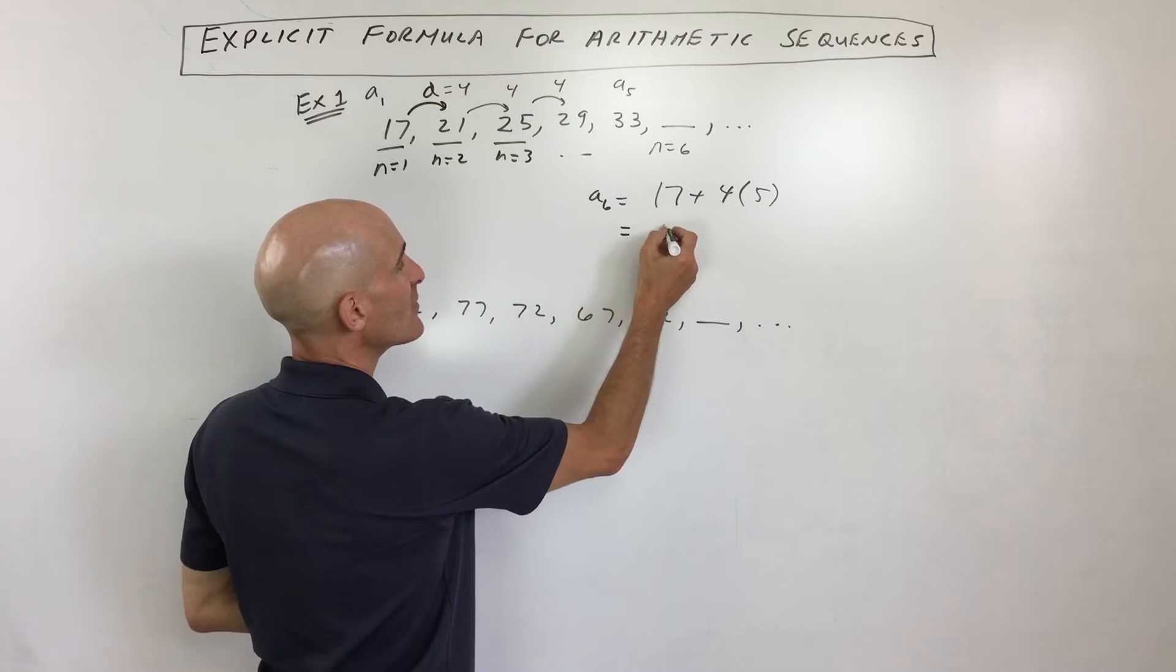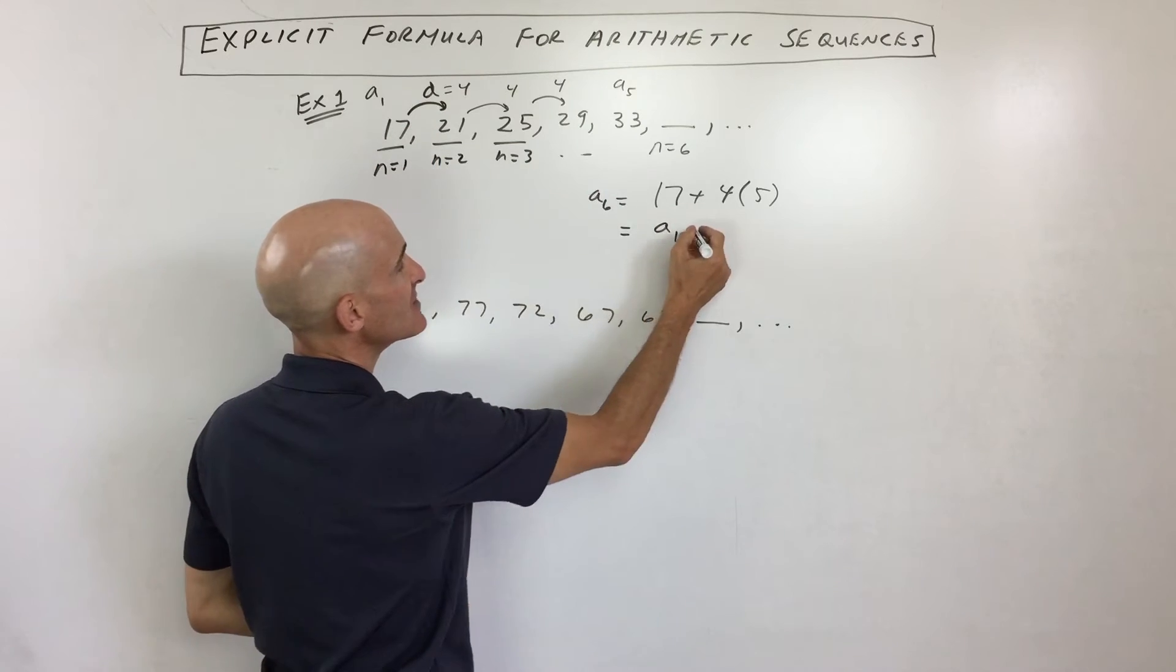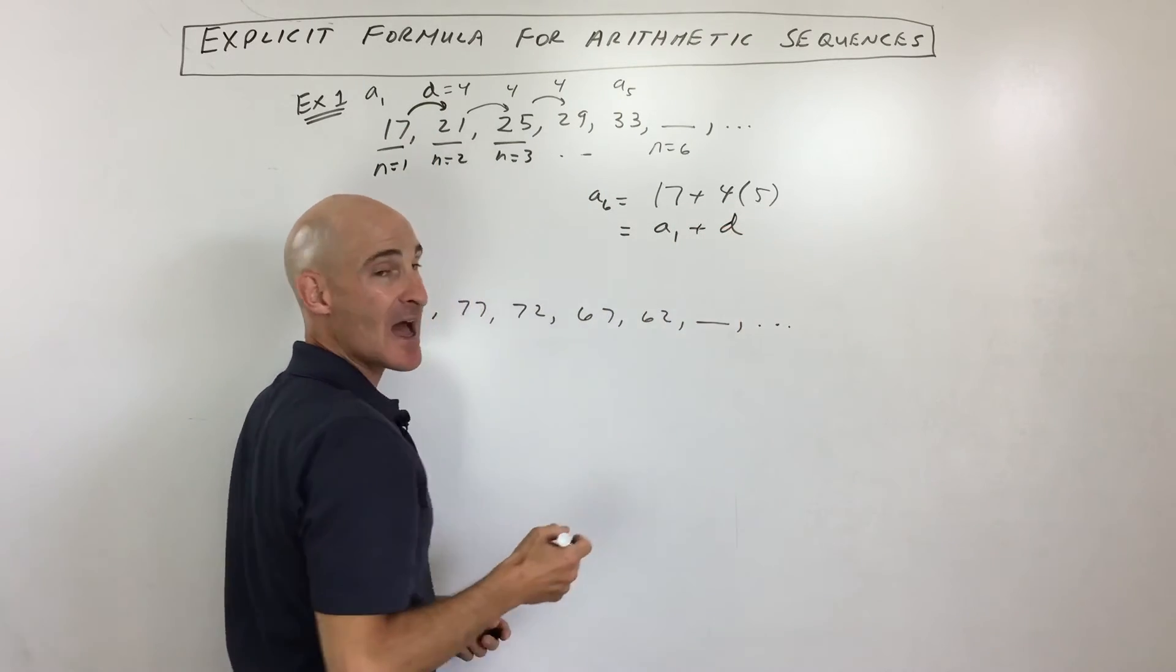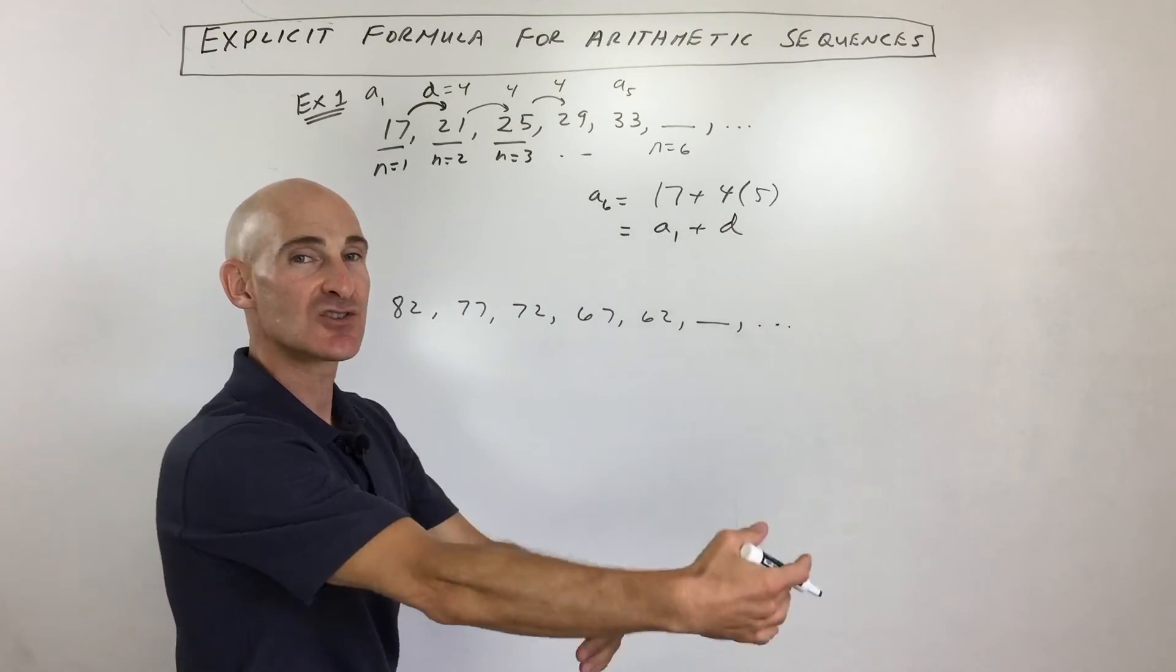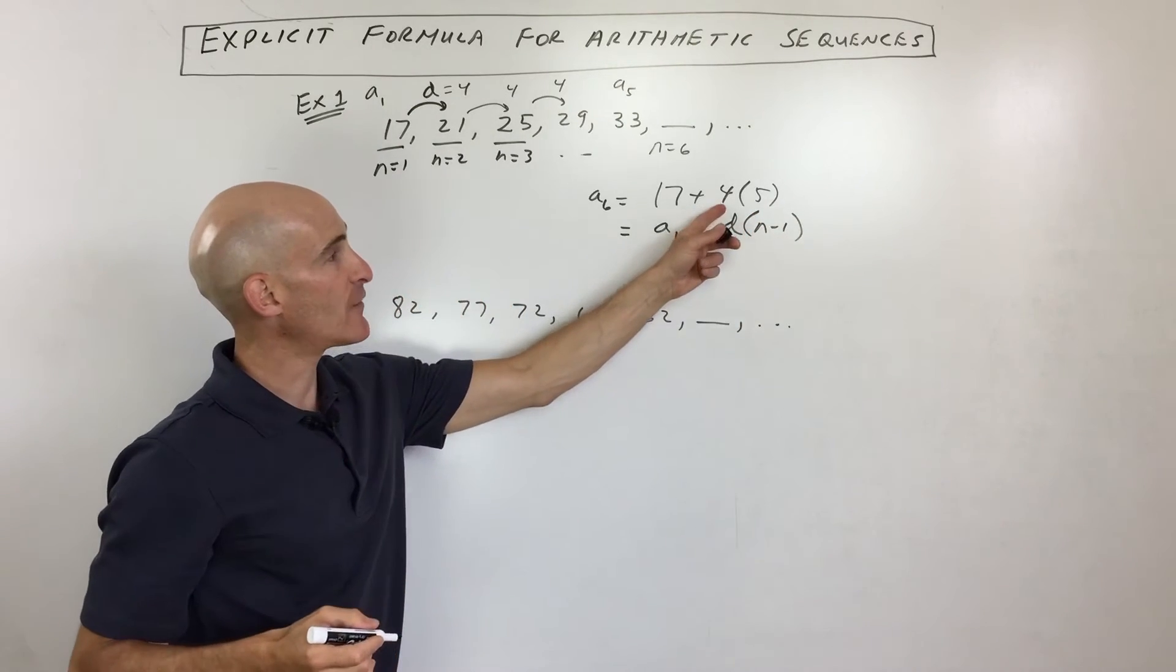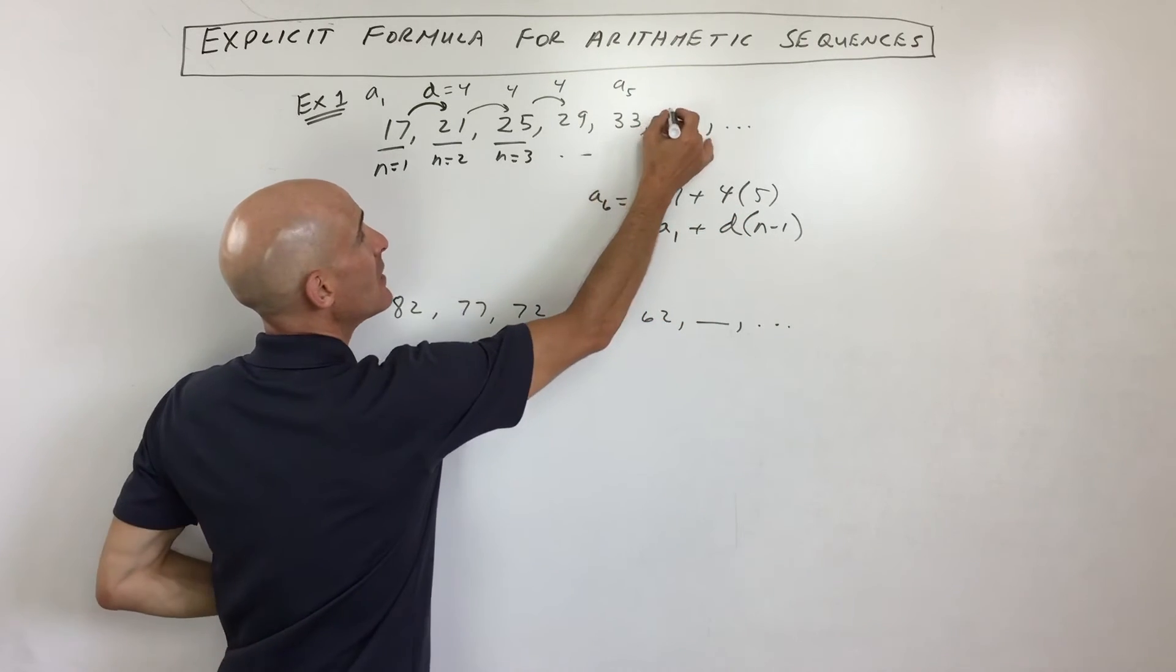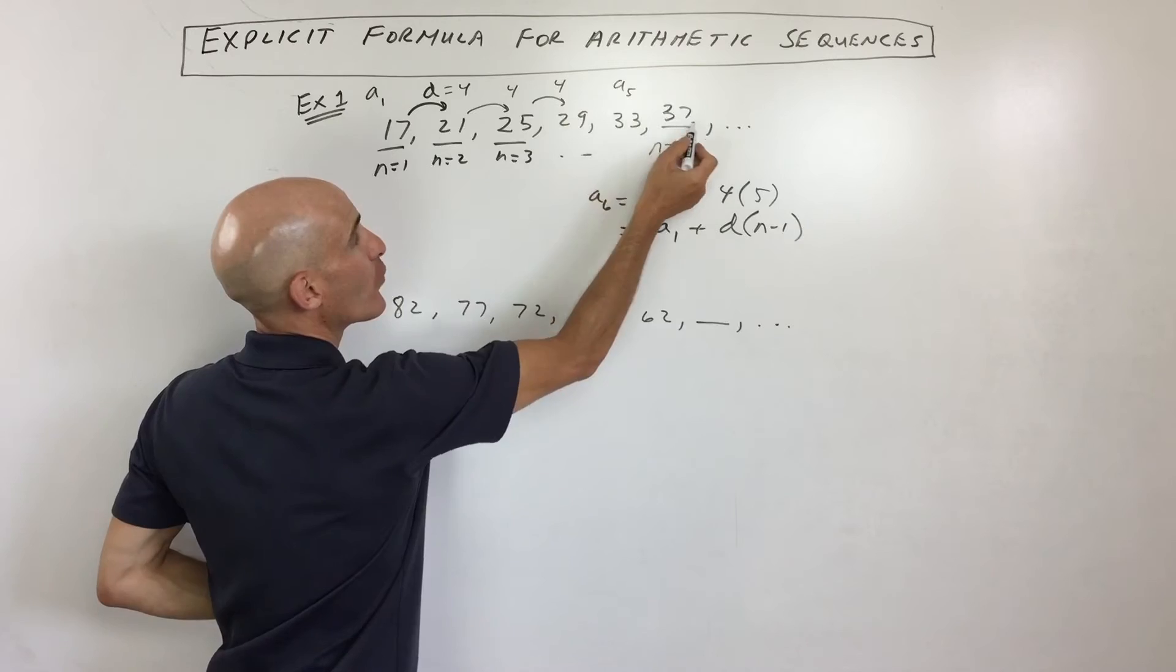So if we wanted to generalize this a little bit more, you could say, well, this is a sub 1, that's the value of the first term, that's 17, plus d, that's the common difference, that's what we're adding to get to the next term. And you want to add that d, n minus 1 times. So in this case, you're adding 4 five times, that's 20, plus 17, that's 37, which makes sense because we were adding 4 each time.